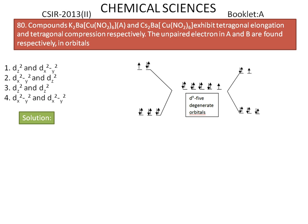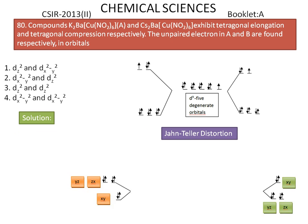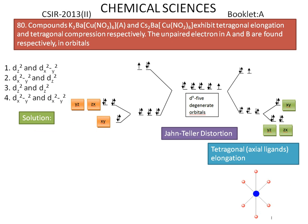We conclude that shorter bonds on the axis of the orbitals will have unpaired electrons. In tetragonal elongation, the structure is shown here — the two axial bonds are longer, and the four equatorial bonds are shorter. According to Jahn-Teller distortion, the shorter bonds are the equatorial bonds lying on the xy plane. The corresponding orbital is dx²-y², so the unpaired electron will be present in dx²-y².